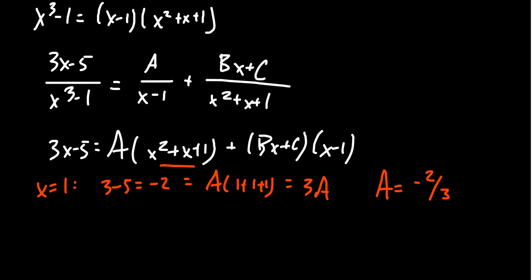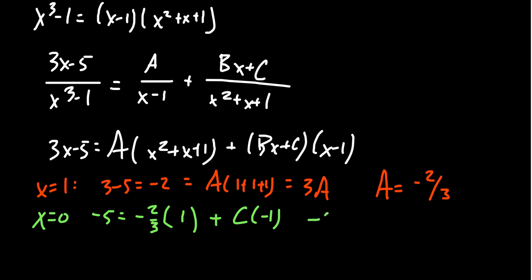Without using complex numbers, we're going to stick with real numbers here. We could use x = 0, which has a little convenience. If you plug in 0, you get -5 on the left. On the right, we know A = -2/3. Plugging in 0 gives 0 and 1 for the terms, and the advantage is that 0 will annihilate B and leave C behind, so we get C times (-1). Simplifying: -5 + 2/3 = -C, so -15/3 + 2/3 = -13/3, giving C = 13/3.